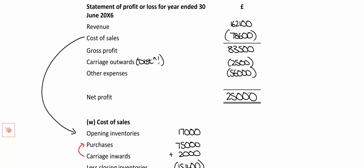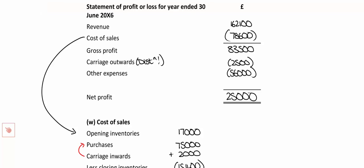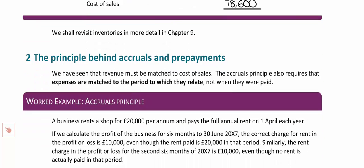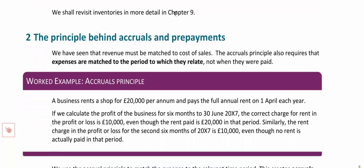Carriage inwards and carriage outwards live in very different places in the statement of profit or loss. There are questions in the question bank that test this clearly. So that's cost of sales done. We'll talk more about inventories later and revisit that cost of sales working. But that's the perfect time for a break before we look at the main event of this chapter: accruals and prepayments.